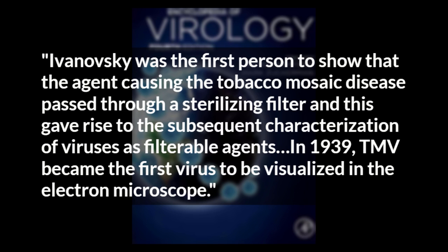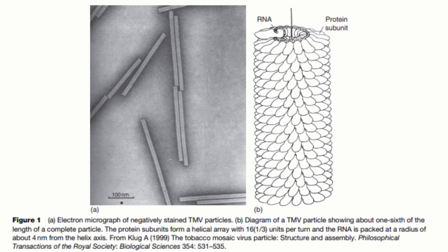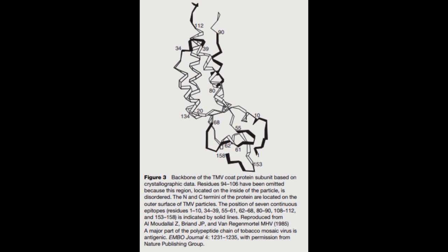In 1939, TMV became the first virus to be visualized in the electron microscope. The Encyclopedia goes on to report that in 1956, it was also the first virus to be shown to contain genetic material. The section then provides some pictures and diagrams of what they say is the virus, including a detailed description of its protein coat. There is plenty of information collected about this alleged infectious particle, but where and when was it shown that it is a virus?